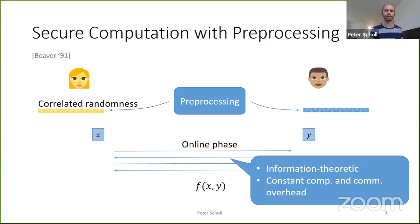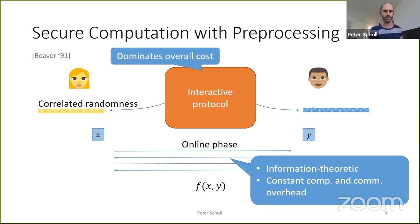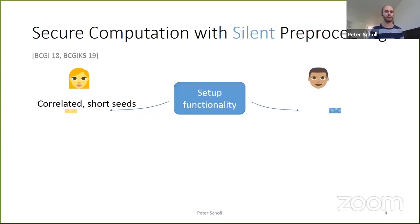Of course, the downside is that we have this trusted dealer who has to generate the correlated randomness. In practice, we have to replace this with an interactive protocol where parties exchange messages to generate the required correlated randomness. Unfortunately, this tends to dominate the overall cost of the computation, simply because you need a lot of correlated randomness to evaluate a function of reasonable complexity — making it a bottleneck in both communication and computation.